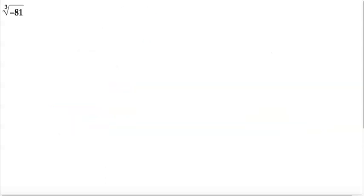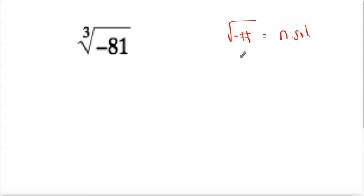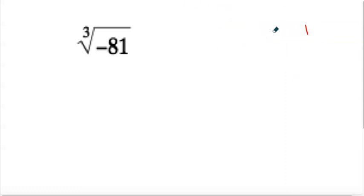Alright, let's take a look at another one: the cube root of negative 81. So here's one major difference between square roots and cube roots. You cannot take the square root of a negative number right now — it comes up as no solution. Soon in Algebra 2 you can take the square root of a negative number and it will become an imaginary solution, but we'll leave that for Algebra 2. Right now what you need to know is you can take the cube root of a negative number.